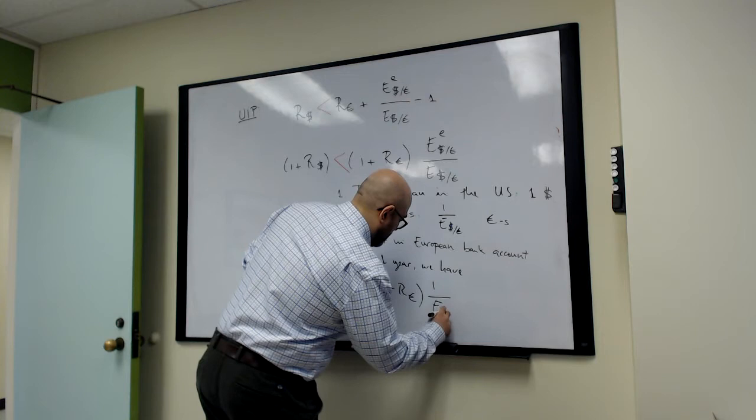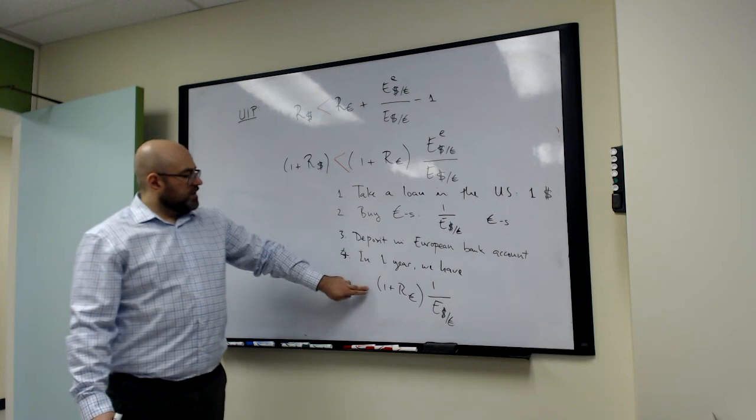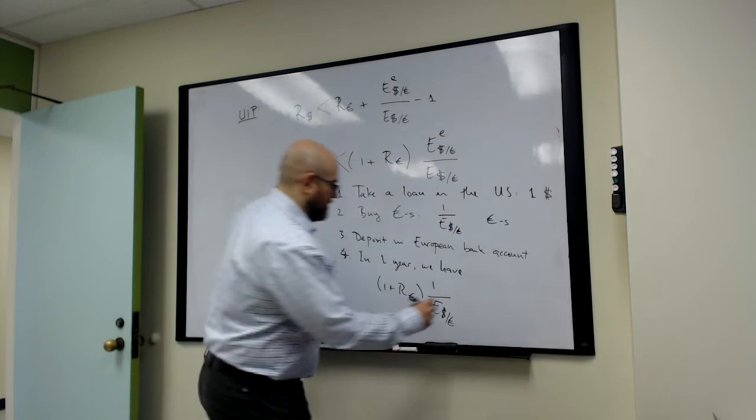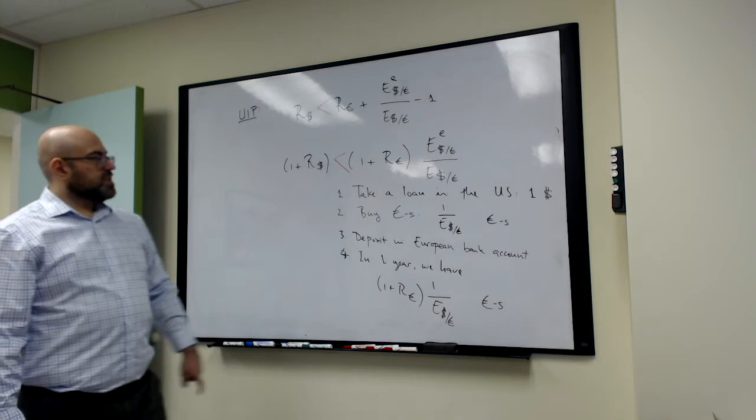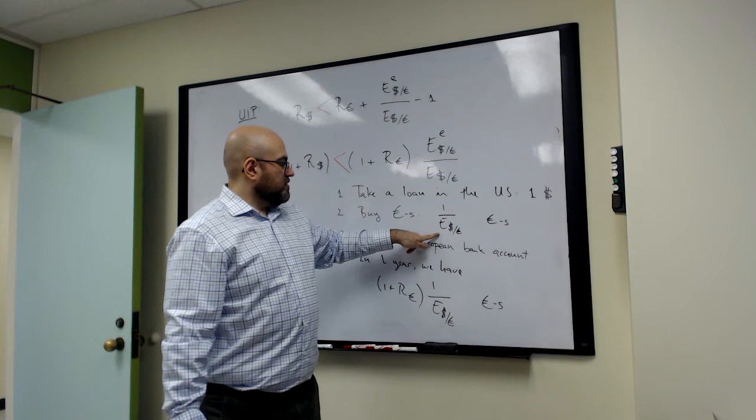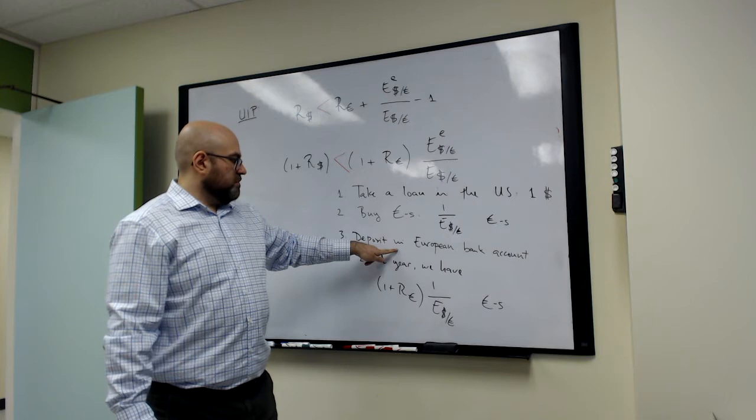So in one year, the balance of our European bank account will read this, and this is a euros quantity. So we started with one dollar today, we immediately turned that into euros, deposited that in a one year term bank account in Europe, and then in one year, we have this many euros in the European bank.